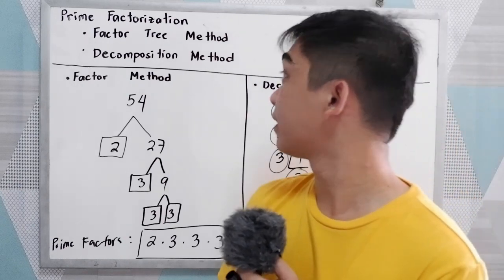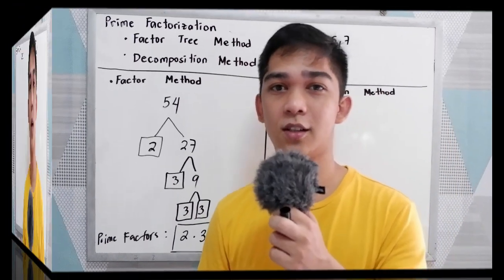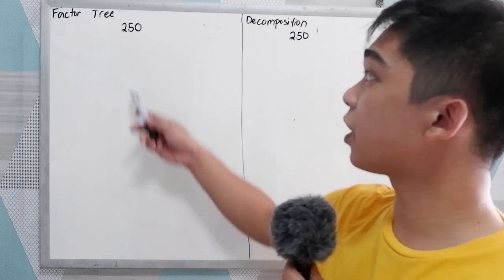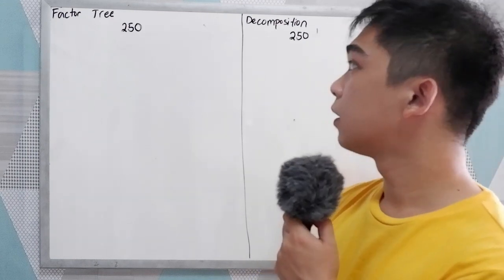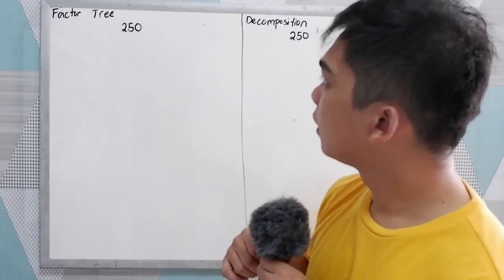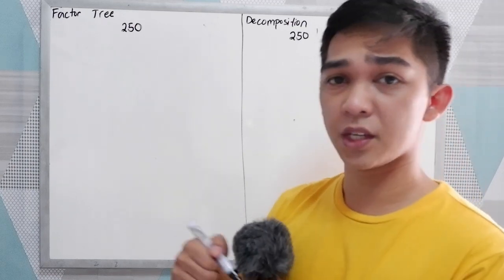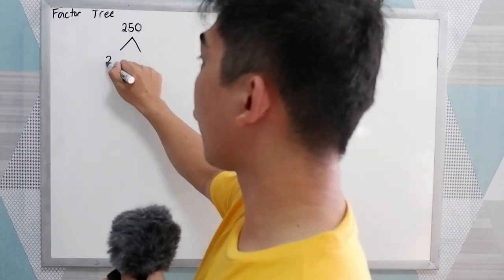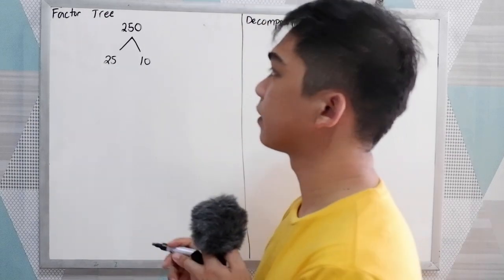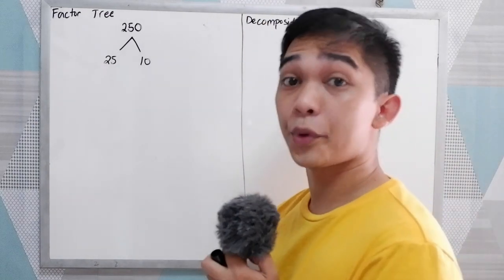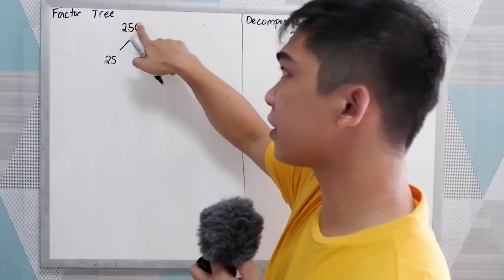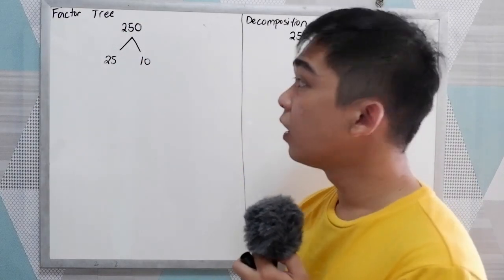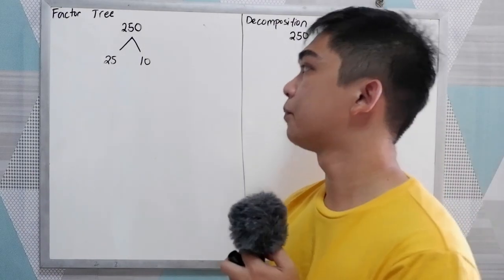That is the factor tree method and the decomposition method. Let's have another example: find the prime factors of 250 using the factor tree method and the decomposition method. We know that the factors of 250 are 25 and 10, but 25 and 10 are not prime numbers. So 25 times 10 equals 250.